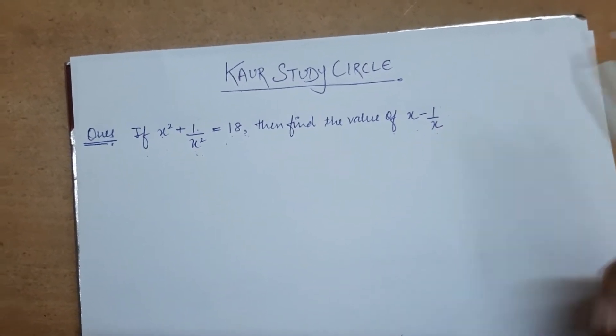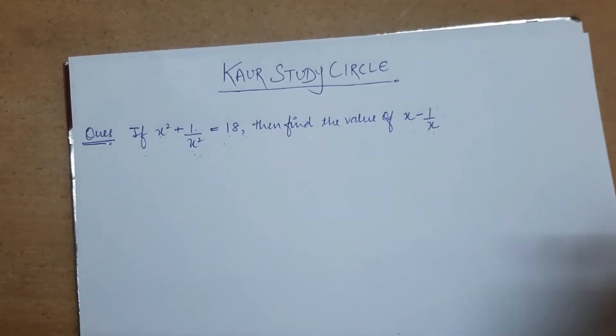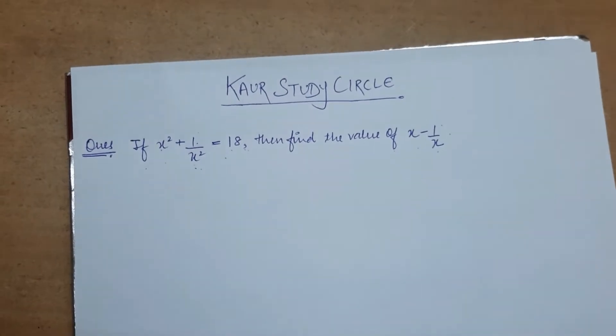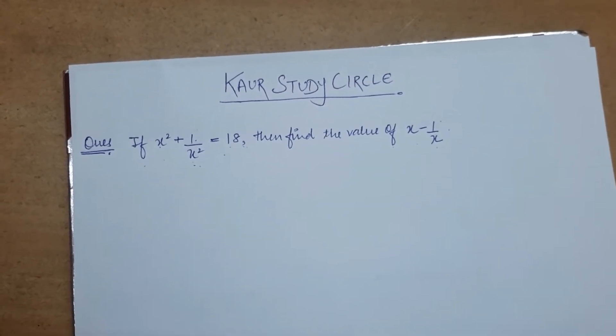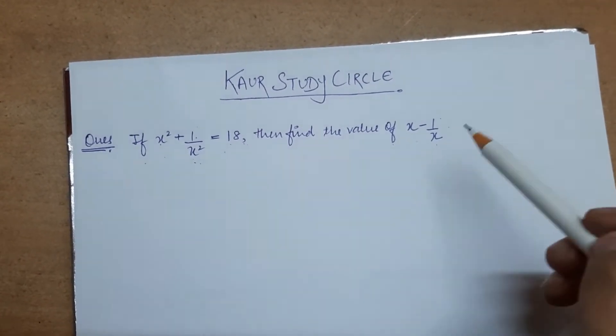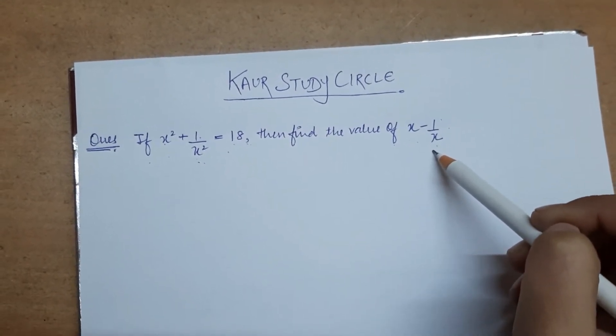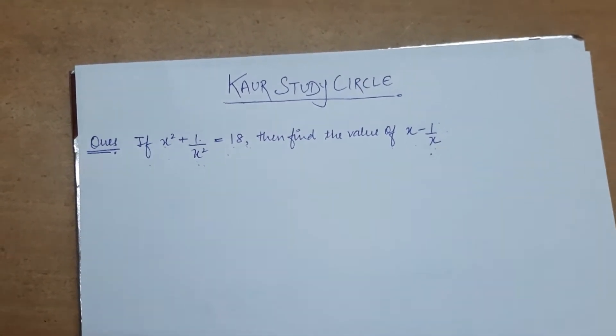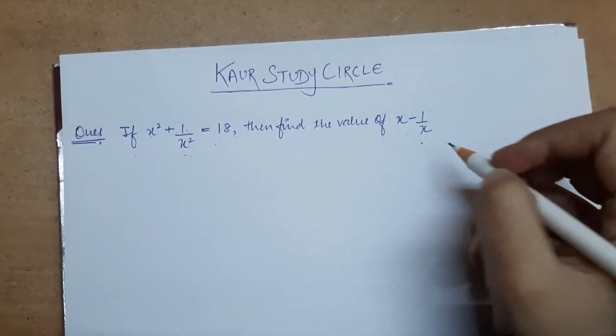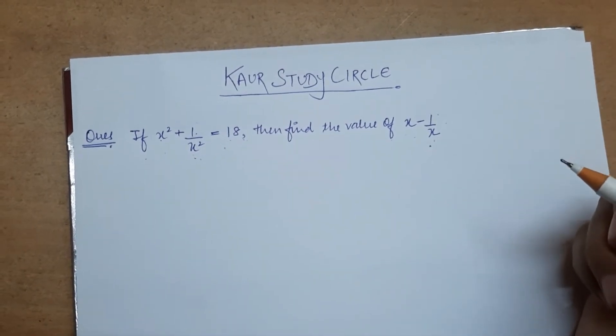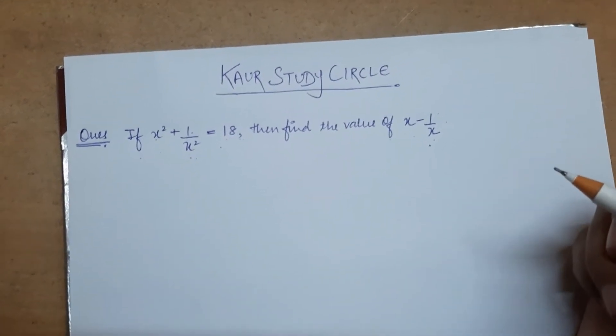This is a very easy question, you don't need to take much tension about it. It's a very simple question. Look, you have to find the value of x minus 1 by x, but you have an identity. You know we have identities: a plus b whole square and a minus b whole square.